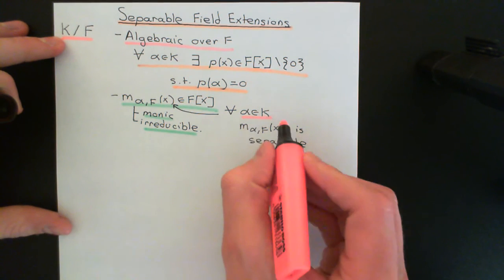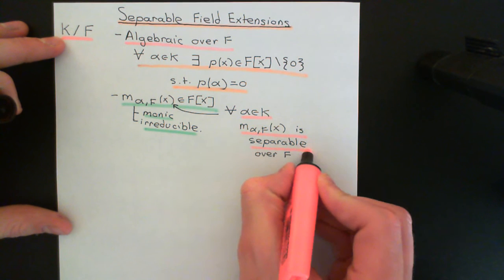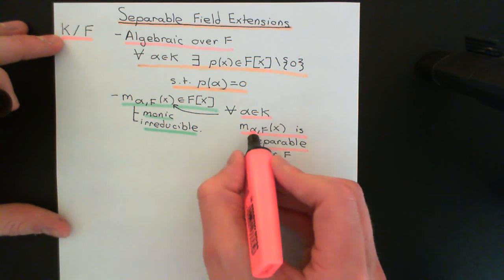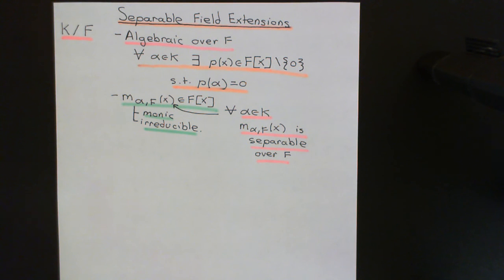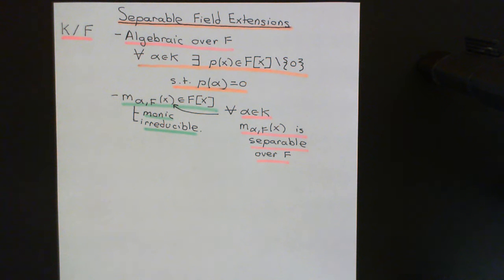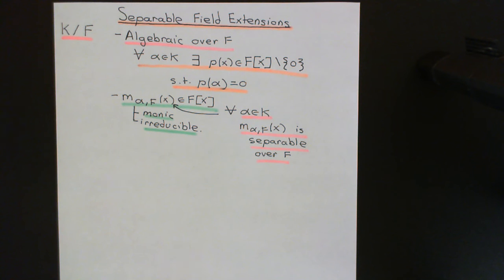We've spent the past few videos in this playlist discussing exactly what it means for a polynomial to be separable over F. As a brief reminder, it means that if you were to construct the splitting field — a field extension of the initial field F — for this minimal polynomial for alpha over F, you would find that all of the roots of the polynomial in that splitting field were simple roots. There are no roots with multiplicity greater than one — no repeated roots. That's the definition of a separable polynomial in the ring of polynomials over the field F.